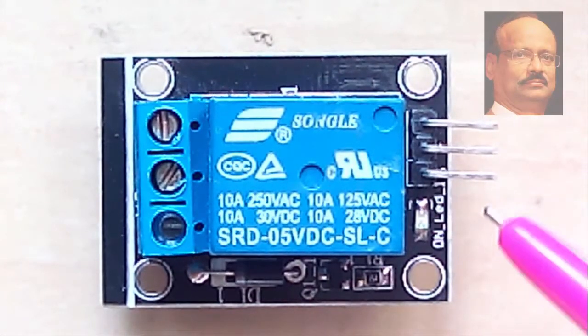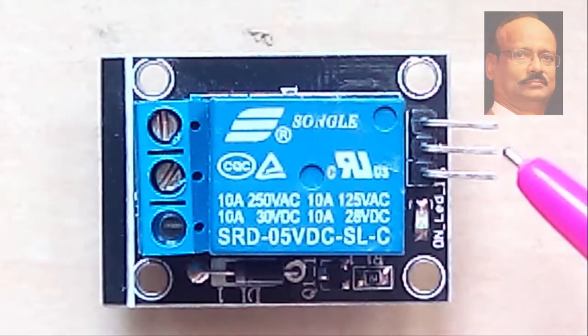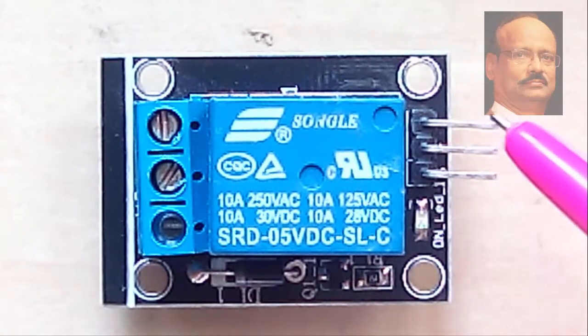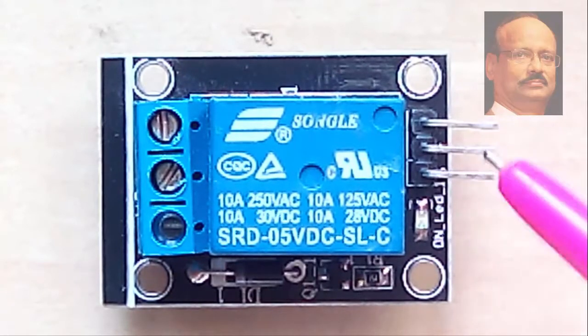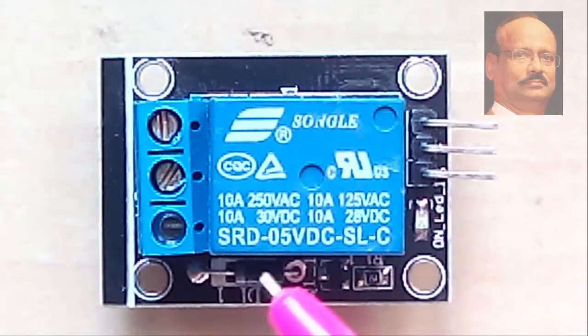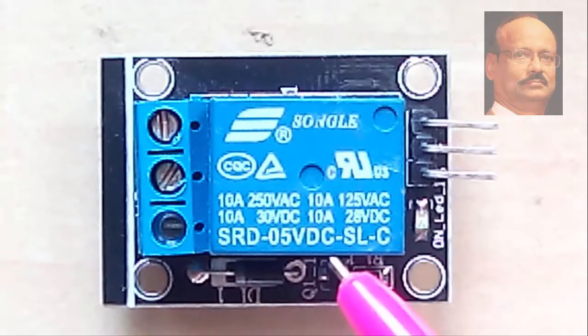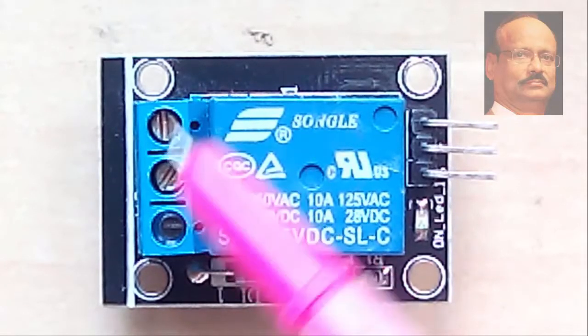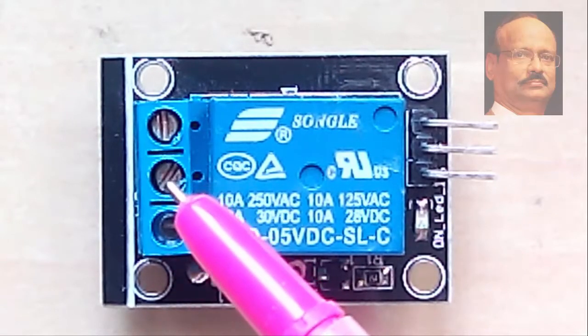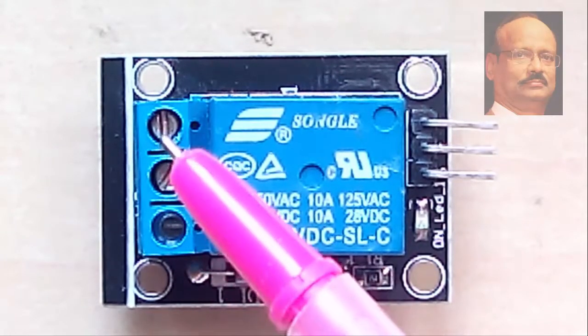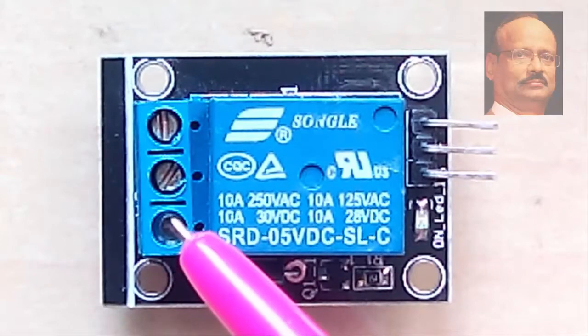In this, what we notice is written here: this side is positive, this side is negative, and this is the sensing voltage. It is written here S plus minus, and we can read that this relay is 5 volt DC and it has got only one set of contacts which we call NO and NC. This being the common point, one of them is NO and one of them is NC.